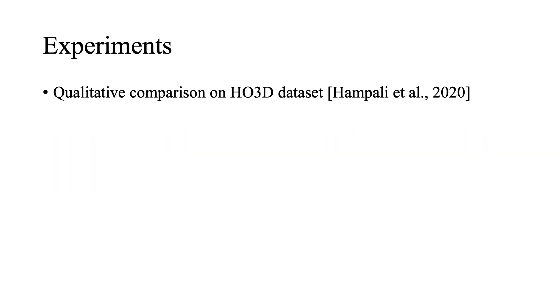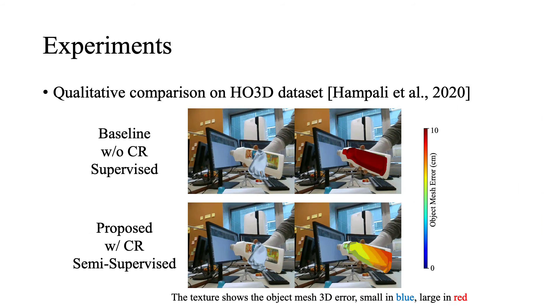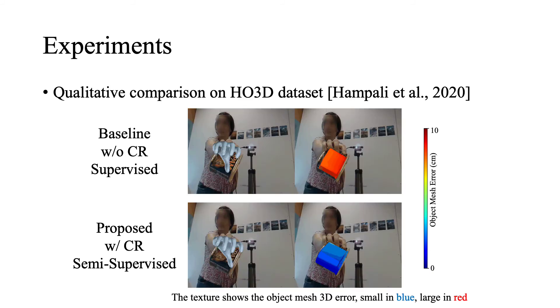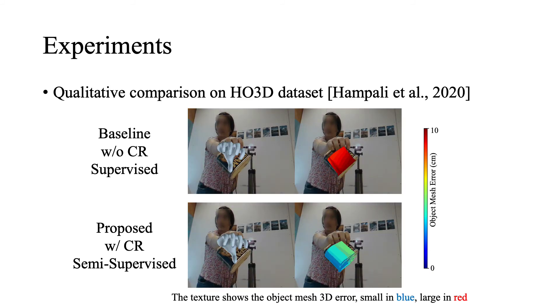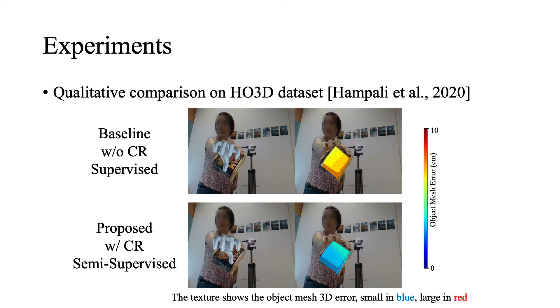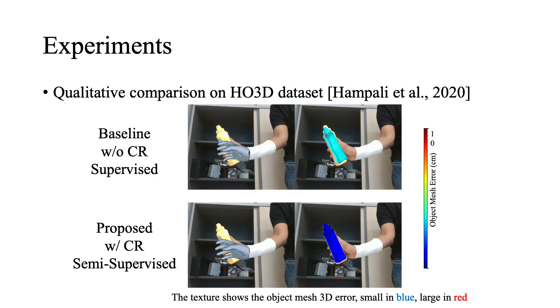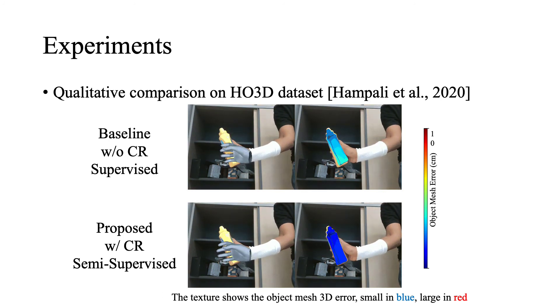We evaluate hand object pose performance on the HO3D dataset and visualize the predictions. The first and second columns show the estimated hand mesh and object pose. The corner shows the object mesh arrow, small in blue and large in red. The hand pose is evaluated online; ground truths are unavailable. We compare our method against the baseline without semi-supervised learning and contextual reasoning. It demonstrates our method can well handle occlusion in the interaction and has much better object pose estimation.